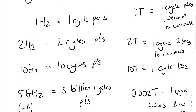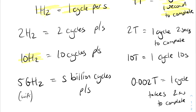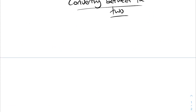Hopefully now you can see the difference. One hertz is one cycle per second, and one T means it takes one second for one cycle to complete. When you look at 10 hertz you get 10 cycles per second, while 10T means you get one cycle every 10 seconds. As you can see, they are very closely related — frequency and period are just the inverse of each other. To find frequency you do one over the period, and to find the period you do one over the frequency.